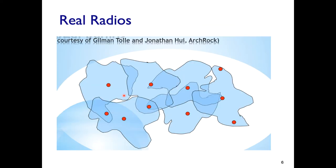In real life, the transmission range is not a perfect circle — there are many objects, so the coverage contour is irregular. This more realistic shape determines how different base stations should be deployed to provide coverage over a large area.